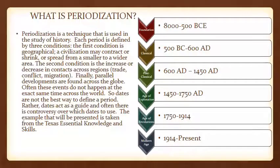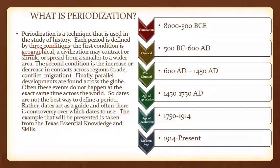So what is periodization? Periodization is a technique used in the study of history. Each period is defined by three conditions. The first condition is geographical — a civilization may contract or shrink, get bigger or smaller, or spread from a smaller to a wider area.